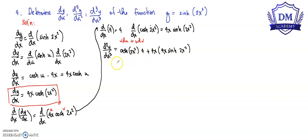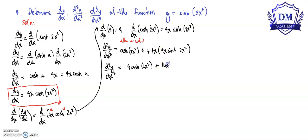So the second derivative is equal to 4 hyperbolic cosine of 2x squared plus 16x squared hyperbolic sine of 2x squared.